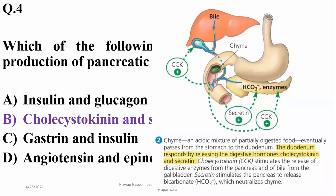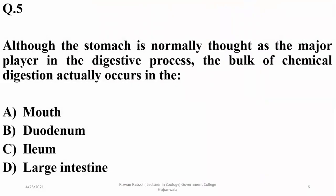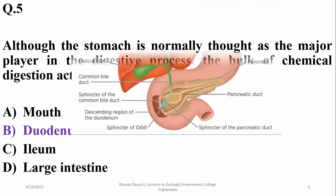Although the stomach is normally thought of as a major player in the digestive process, the bulk of chemical digestion actually occurs in the duodenum, where secretions from the pancreas and liver come in for digestion. So the right option is beta.